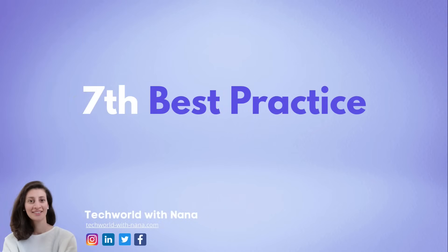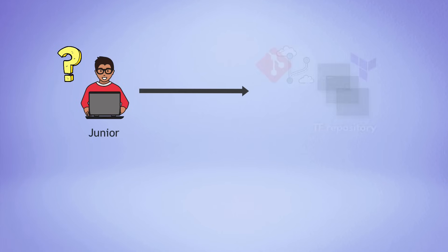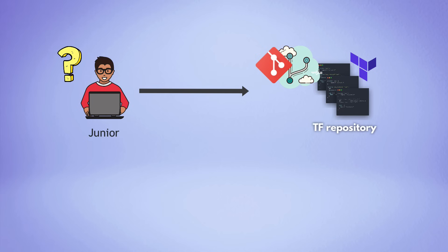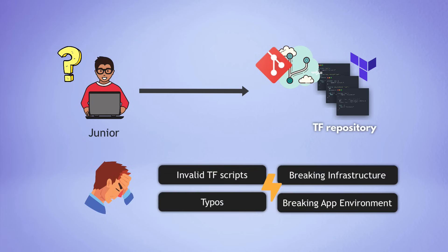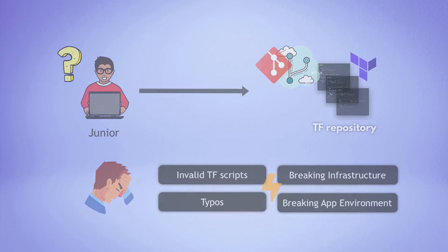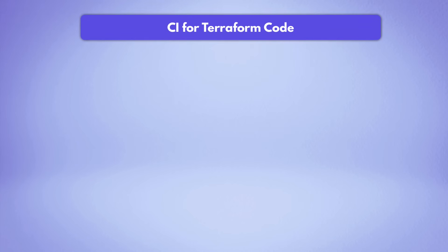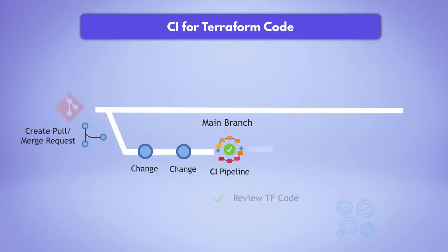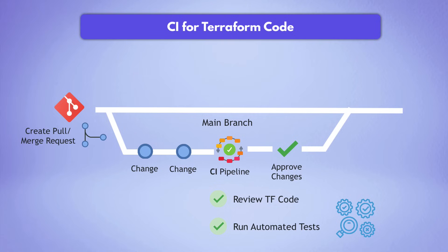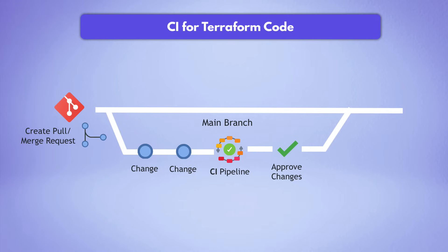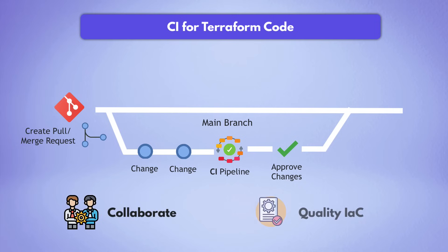Now for best practice number seven: who is allowed to make changes to Terraform code, and can anyone just directly commit changes to the Git repository? The best practice is to treat your Terraform code just like your application code. This means you should have the same process of reviewing and testing changes in your infrastructure code as you have for application code — with a continuous integration pipeline and using merge requests to integrate code changes. This allows your team to collaborate and produce quality infrastructure code that is tested and reviewed.